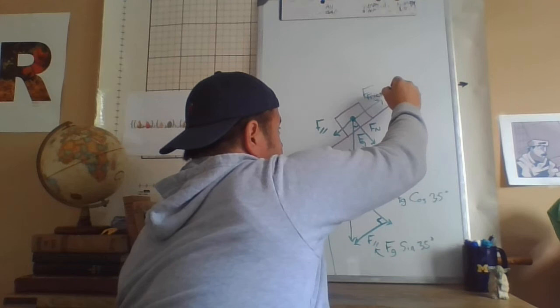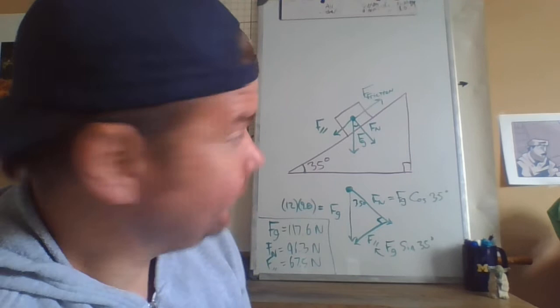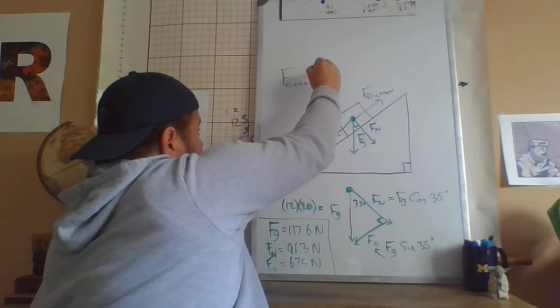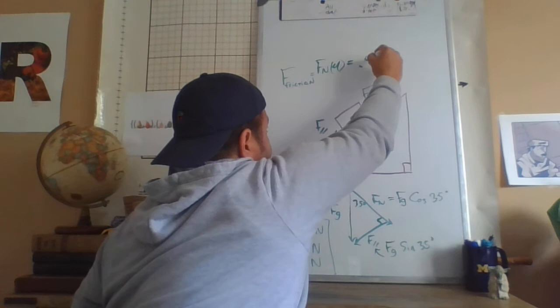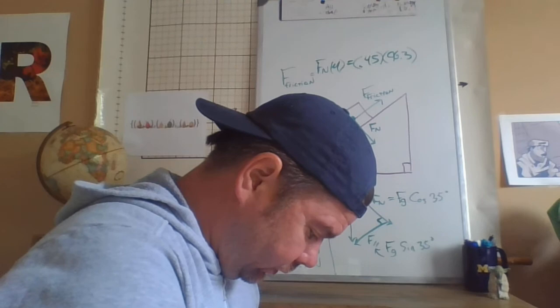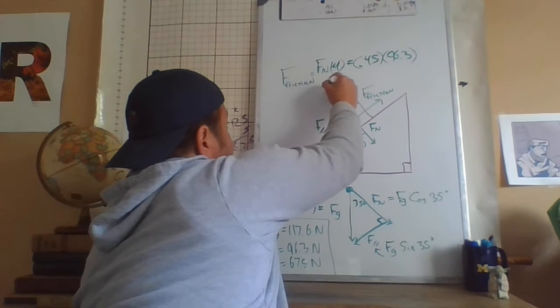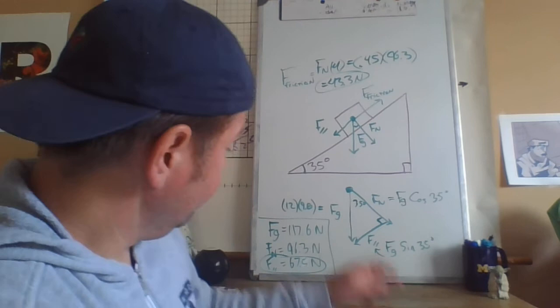The force of static friction. Force of static friction is fighting against the force parallel. So which one wins, which one is bigger? Well, what is the force of static friction? Force of friction equals normal force, which is here, times the coefficient of static friction. What is the coefficient of static friction? 0.45. And the normal force is 96.3. 96.3 times 0.45, 43.3 newtons. So the force of friction is 43.3 newtons. The force parallel is 67.5 newtons. Which one wins?